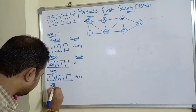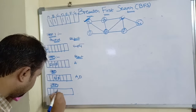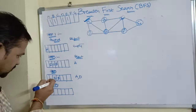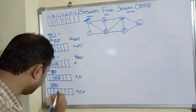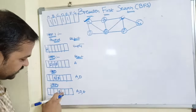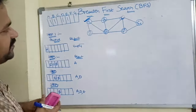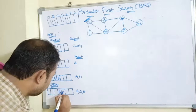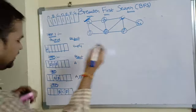Step four: delete E from the front of the queue and display it. The adjacent vertices of E are B, C, and F. B is already visited, but C and F are not visited. So insert C and F into the queue and mark their status as visited.